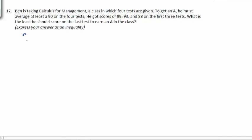Well, in average, we take everything we added up, so 89 plus 93 plus 88 plus our missing fourth test, and we divide by the number of items, in this case, 4. So we want our average to be at least a 90, so it can be greater than a 90 or equal to.